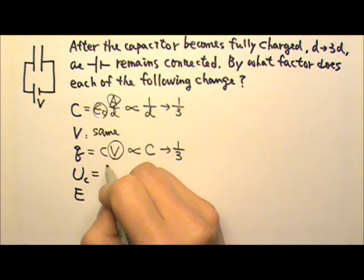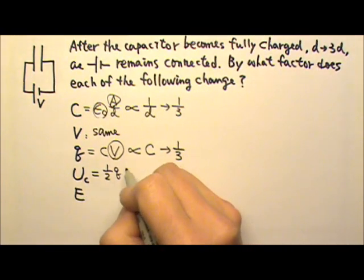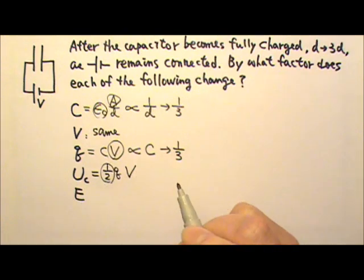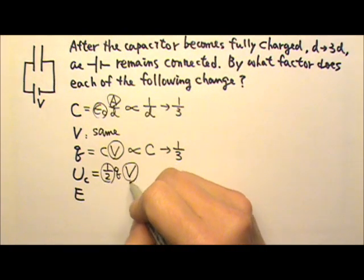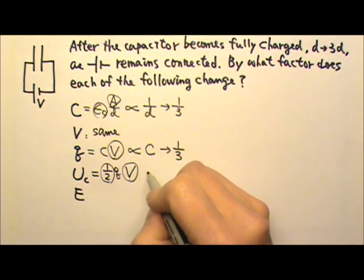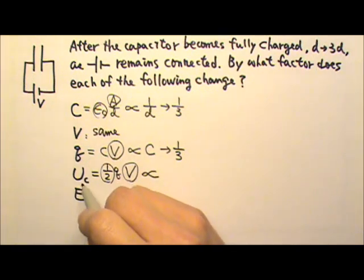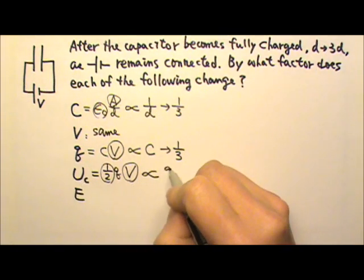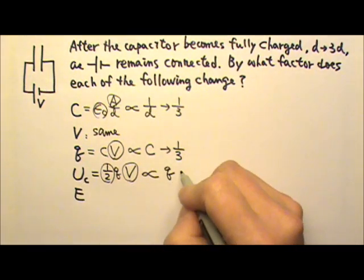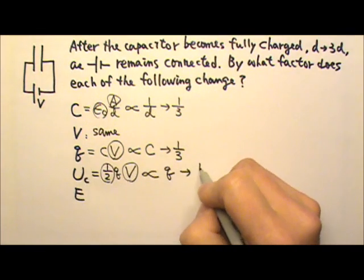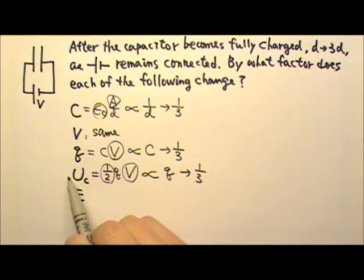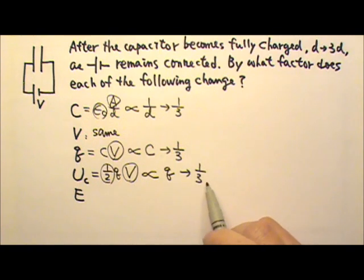Energy stored in the capacitor is one-half QV. One-half never changes, and the voltage in this case stays the same as well. So the energy stored in a capacitor is proportional to the charge on the plates, and the charge becomes one-third. So the energy stored in the capacitor changes by a factor of one-third.